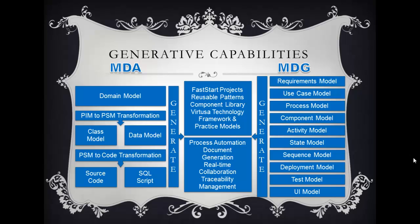On model-driven generation, different technologies help you generate content based on your requirements model, use case model, process, component, activity, state chart, sequence, or deployment models. You also have testing models and user interface models.